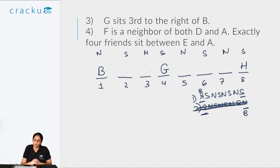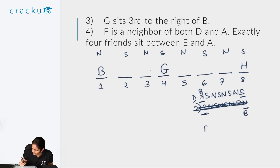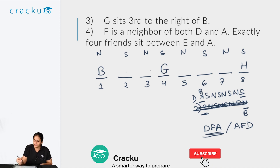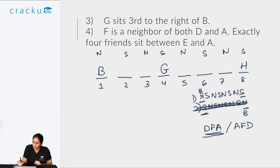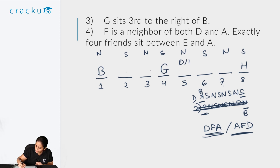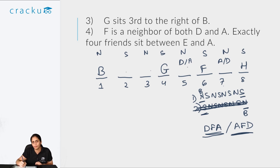The fourth rule says F is a neighbor of both D and A, so F must be between D and A. The possible arrangements are D-F-A or A-F-D, and all three must be seated together. This is only possible if they occupy positions 5, 6, and 7. F is fixed at position 6, while positions 5 and 7 are either D or A.